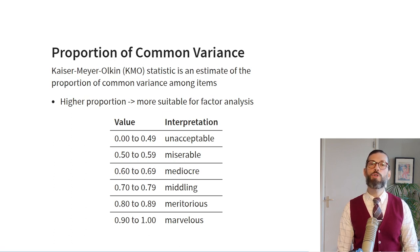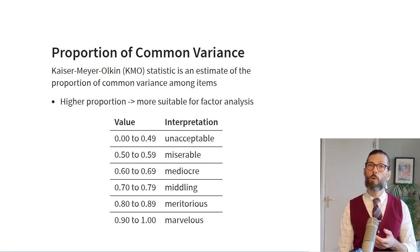To check for multicollinearity when doing EFA, we can use what's called the determinant of the data set, which SPSS gives us by default. We're looking for a determinant between 0.00001 and 1. Note that the size of the determinant depends on the number of items — if you have many items, determinants tend to be smaller. A second criterion is the Kaiser-Meyer-Olkin statistic (KMO), which is an estimate of the proportion of common variance among items. A higher proportion of common variance means factor analysis is more appropriate, and there are rules of thumb that accompany the KMO statistic.